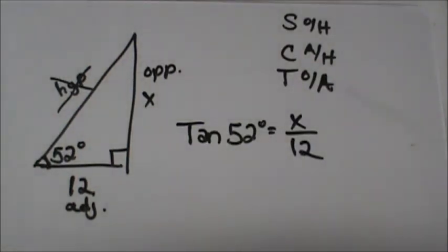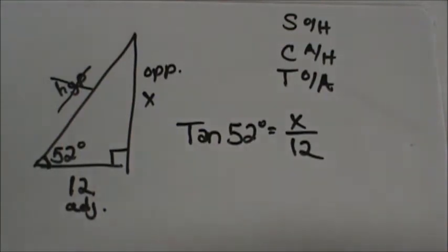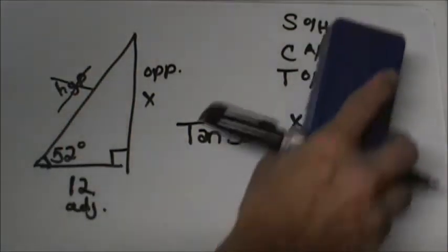So let's go down and we're just going to practice setting these first three problems up — not solving them yet, just setting them up. We have the tangent of 52 is equal to x over 12.